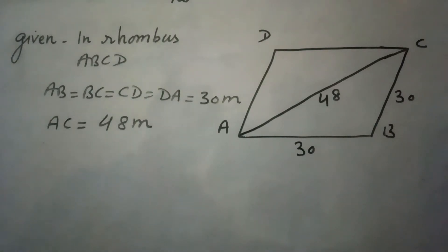In this question it is given that ABCD is a rhombus where the sides of this rhombus are 30 meters and the longer diagonal is 48 meters. The question states that 18 cows are grazing in this rhombus field and we need to find how much area is available for one cow to graze.